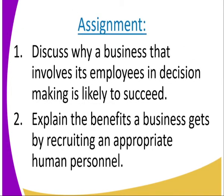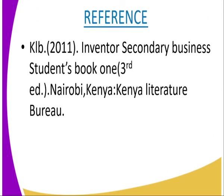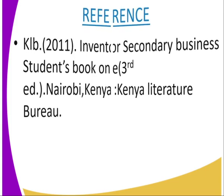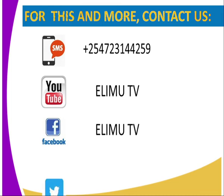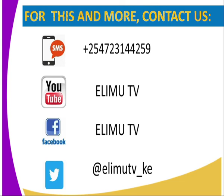Assignment: Discuss why a business that involves employees in decision-making is likely to succeed. Number two, explain the benefits a business gets by recruiting appropriate human personnel. Reference: visit the KELB 2011 secondary business student book for Form 1. If you have any questions, you can reach us through SMS, YouTube, Facebook, or Twitter. Stay tuned to RIM TV. Thank you.